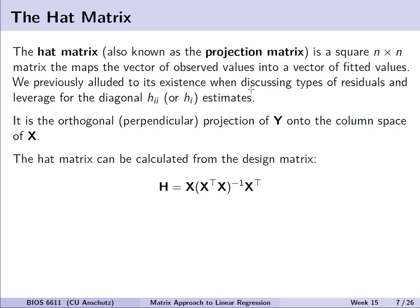Another special matrix worth attention is the hat matrix, also called a projection matrix. It is a square n by n matrix — n observations for both rows and columns — which maps the vector of observed outcome values into the vector of fitted values. We've previously mentioned it when discussing residuals and leverage in diagnostics. The hat matrix is calculated as X times (X-transpose X) inverse times X-transpose.